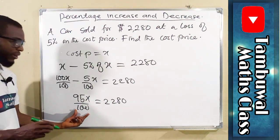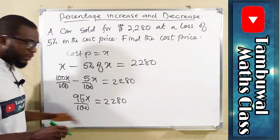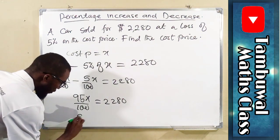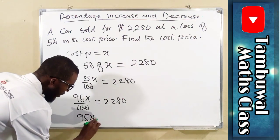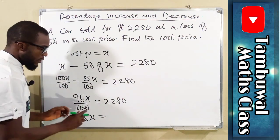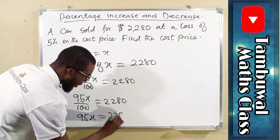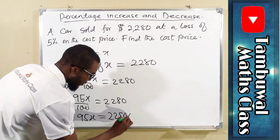This is equal to 2,280. We can multiply both sides by 100, so that we have 95x here, equals 228,000.